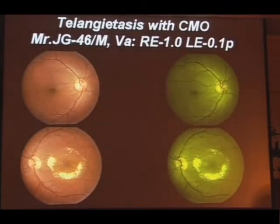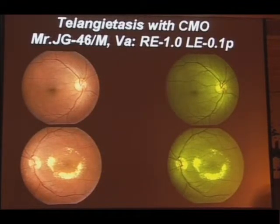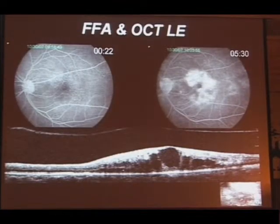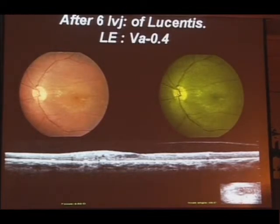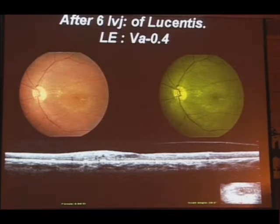This is a patient with telangiectatic changes in the paramacular parafoveal area in the right eye and extensive changes in the left eye with exudates involving the peripheral retina, all shown in two quadrants. Fluorescein angiography confirmed the telangiectatic changes, leakage, and cystoid changes. With perimacular photocoagulation and focal treatment to the macular area, we were able to reduce the exudates substantially and visual improvement was seen, and he continues on follow-up.